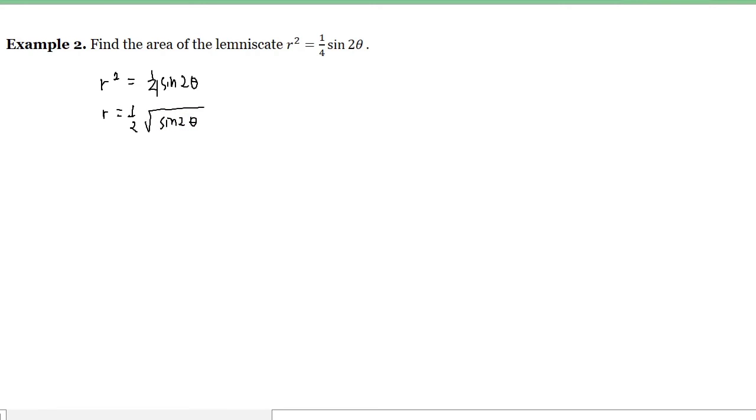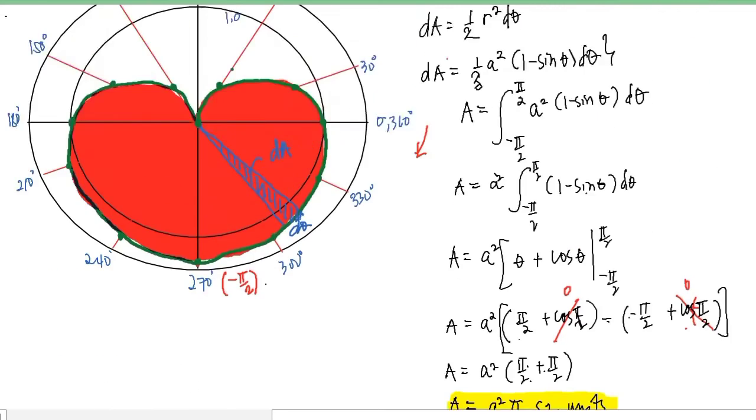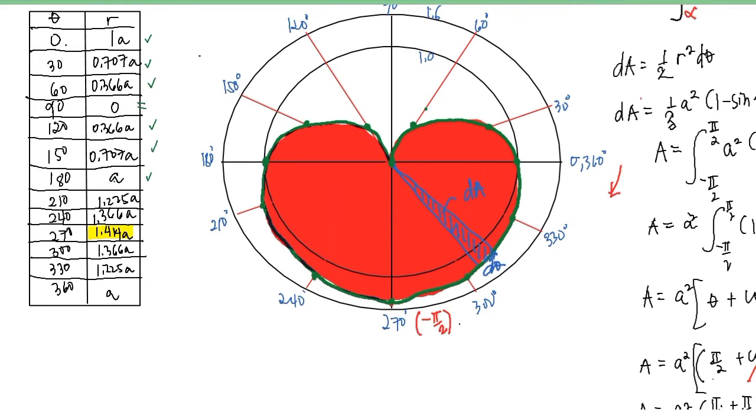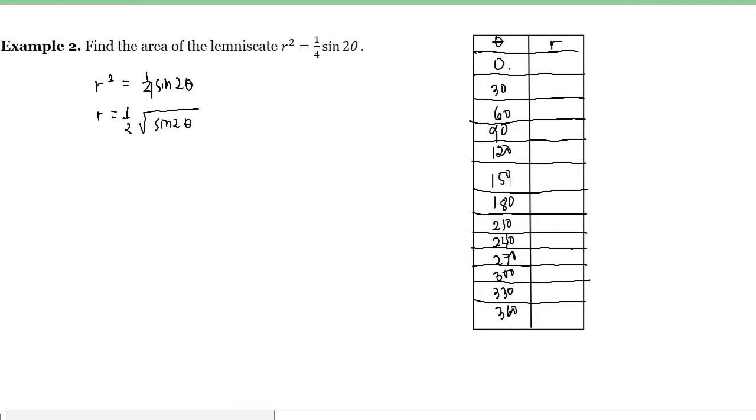So the square root of sin of 2 theta is one-half square root of sin of 2 theta here. This is our new equation, and this is what we're going to work with.